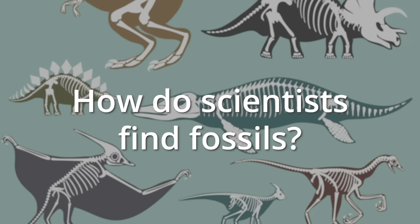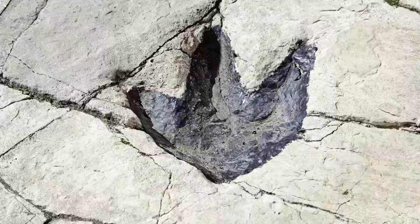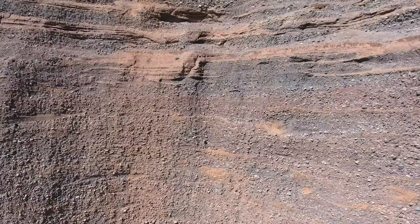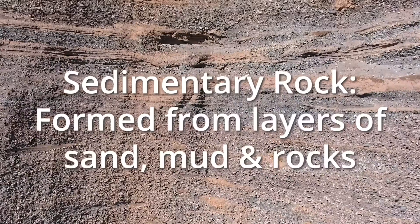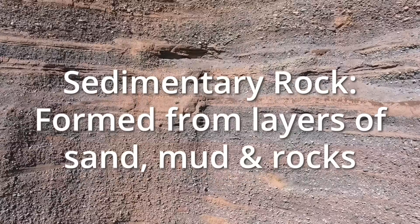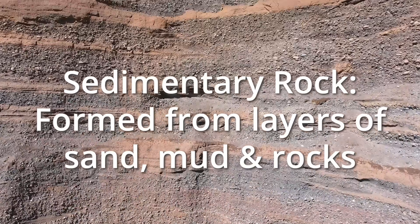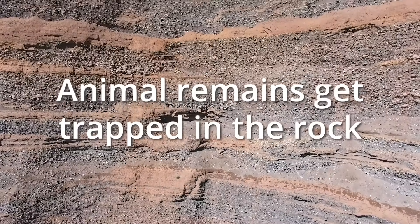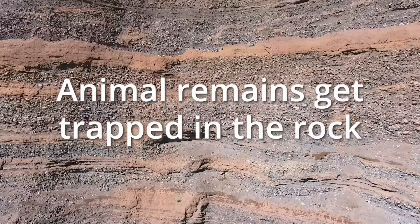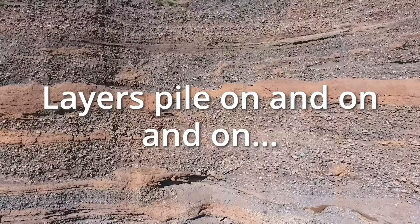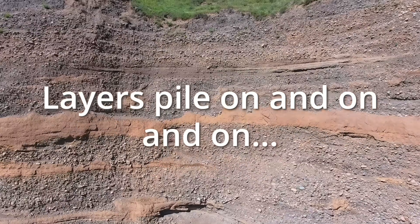So now that you know what fossils are, how do scientists go about finding them? Fossils come in many different colors and take many different forms, depending on where they're found. Most fossils are found in sedimentary rock layers. Sedimentary rock is a type of rock that is formed from layers of sediment, like sand and mud, along with small pieces of larger rock. Over millions of years, remains of animals can get trapped in these layers of rock, and more and more layers pile on top, thus preserving them forever.